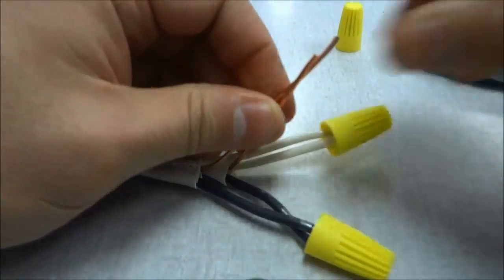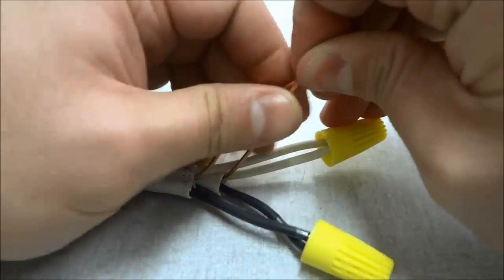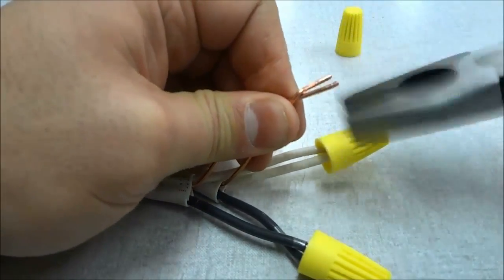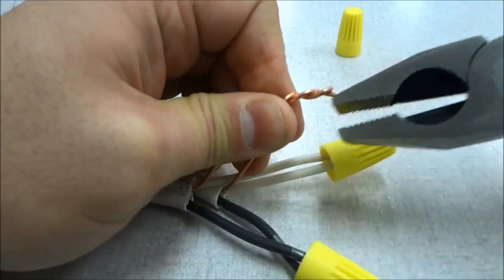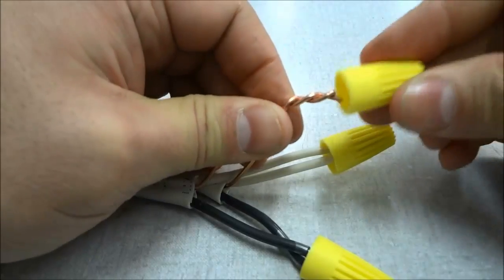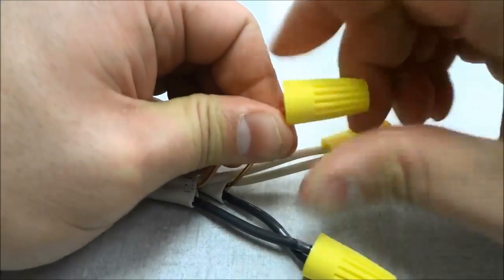We are going to line them up properly, get the pliers and twist them clockwise. And now we can take our wire connector and twist it on.